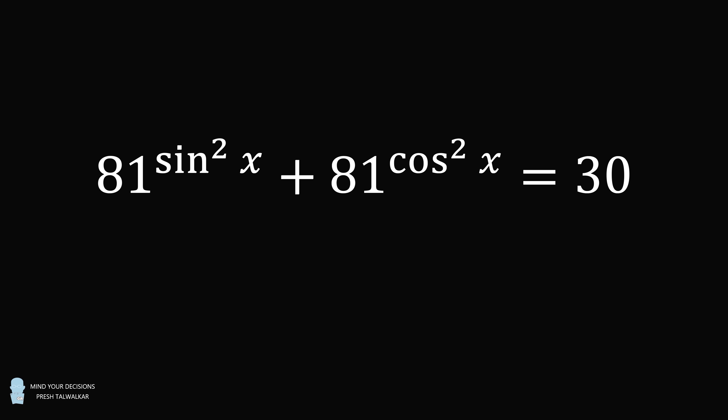Hey, this is Presh Talwalkar. Solve the following equation: 81 to the power sine squared x plus 81 to the power cosine squared x is equal to 30, with the condition that x is greater than or equal to zero degrees but less than 360 degrees. Pause the video if you'd like to give this problem a try, and when you're ready, keep watching to learn how to solve this problem.